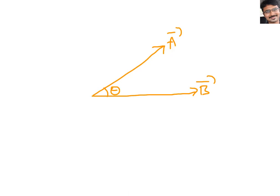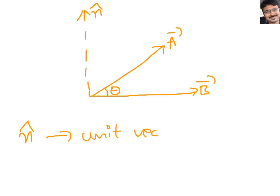Now I can resolve this vector A bar into two components. But to resolve into two components, I need another direction. Let me draw one perpendicular to B bar. So now I can resolve A bar into two components: one along B bar and one along this perpendicular direction. Let me give that perpendicular direction a unit vector N cap.